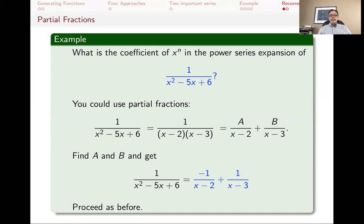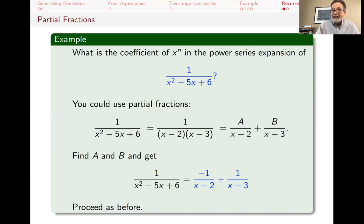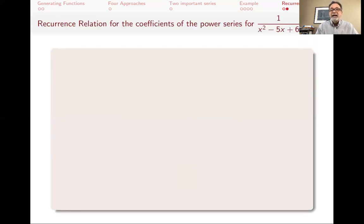We could proceed as before — for example, 1/(x-3) factors as -1/3 · 1/(1 - x/3), and we can write the power series in terms of multi-choose numbers, then combine both fractions. But here I want to show something different: how to get a recurrence relation for the coefficients.